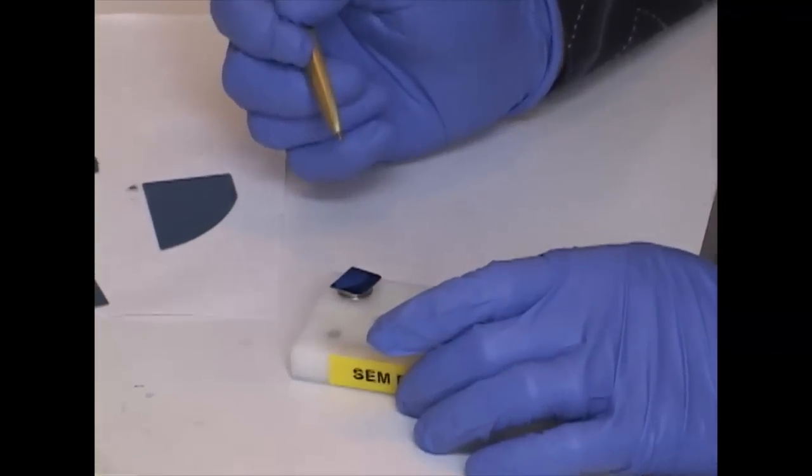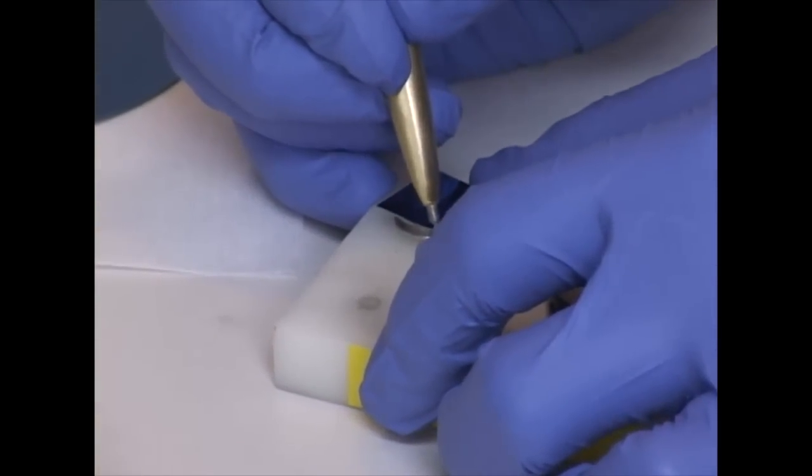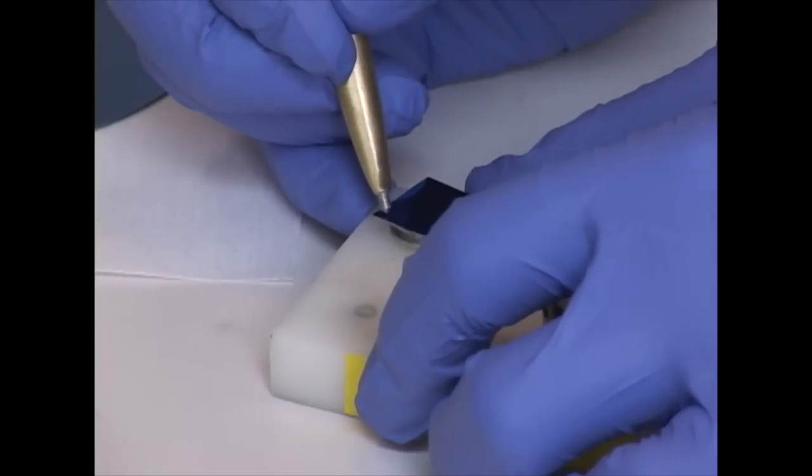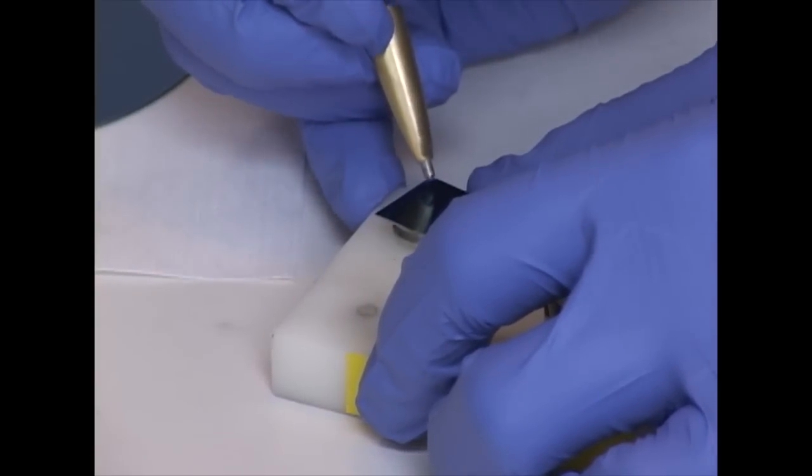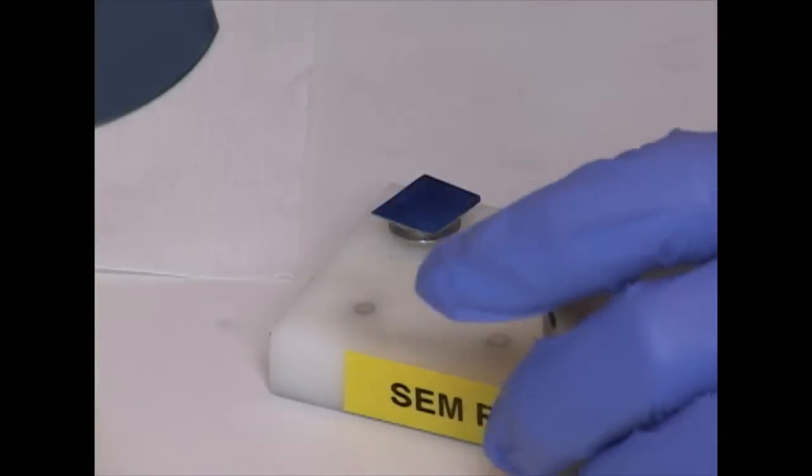The surface of this resist is featureless. So in order to have something to focus on so that I know that the resist is at the right height, I'm going to carve numbers into the corners on this chip. They don't need to be deep enough that they score the silicon. They just need to be through the resist layer. So I'm numbering the corners clockwise, one through four.